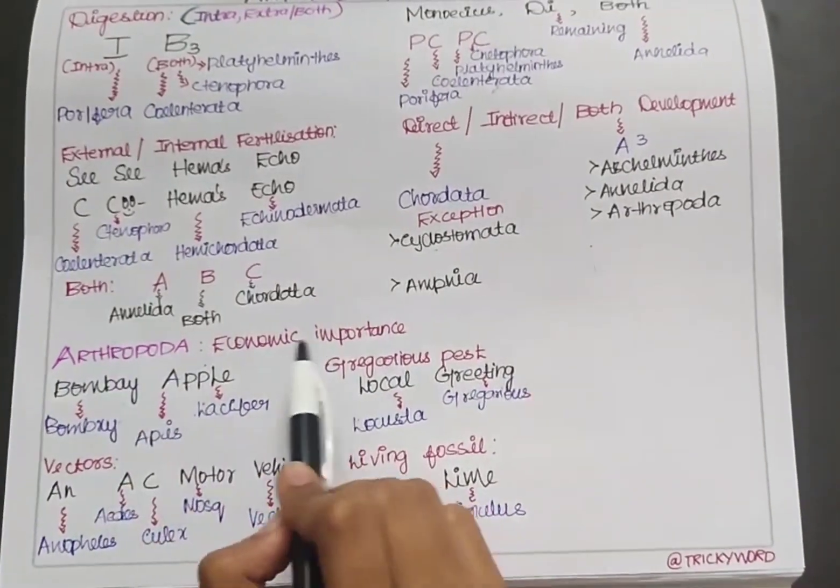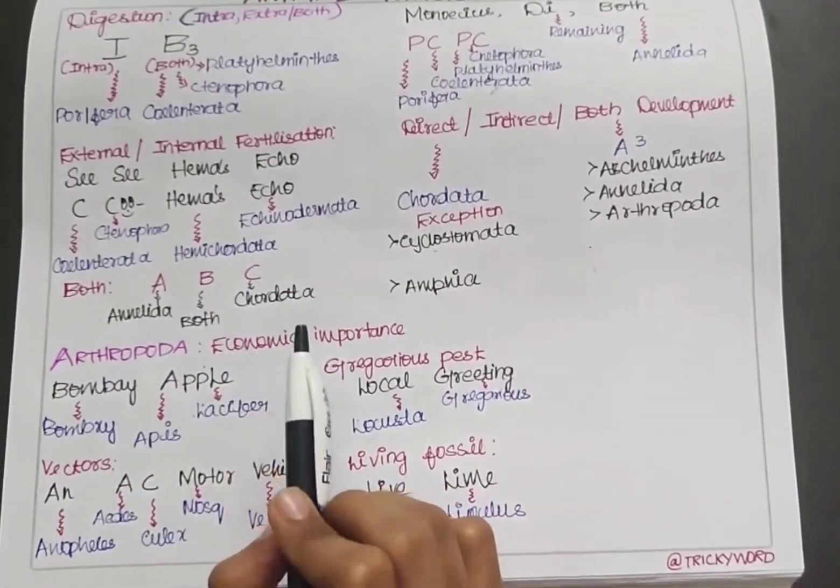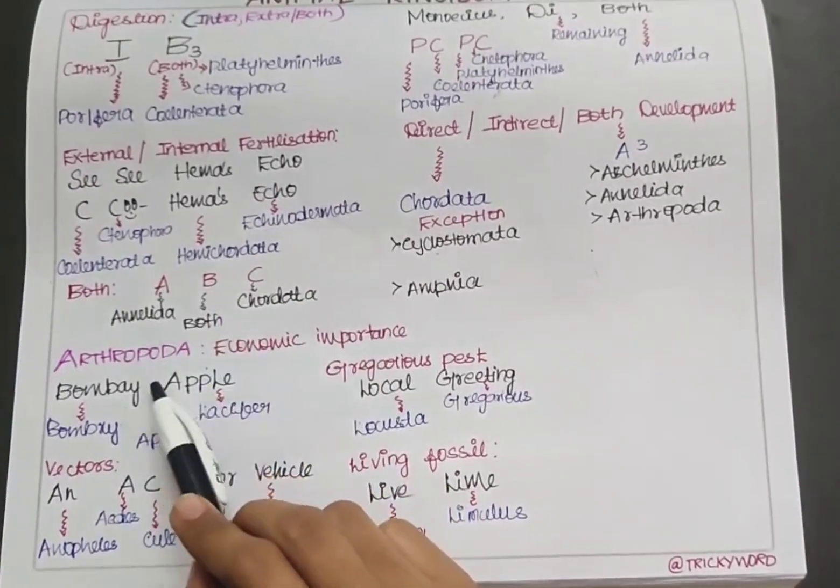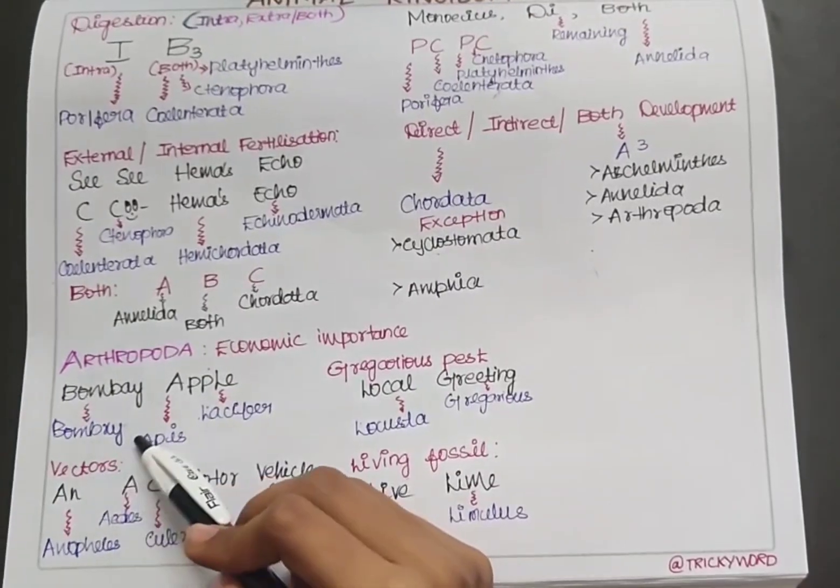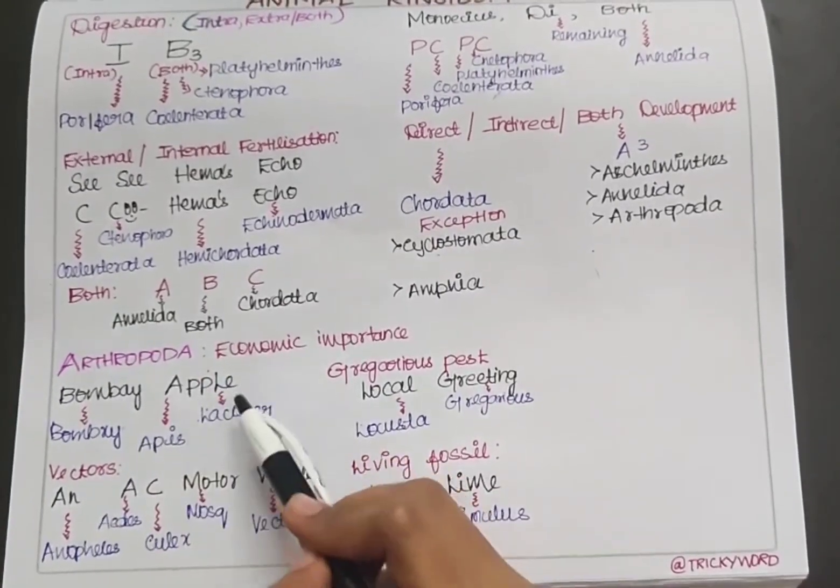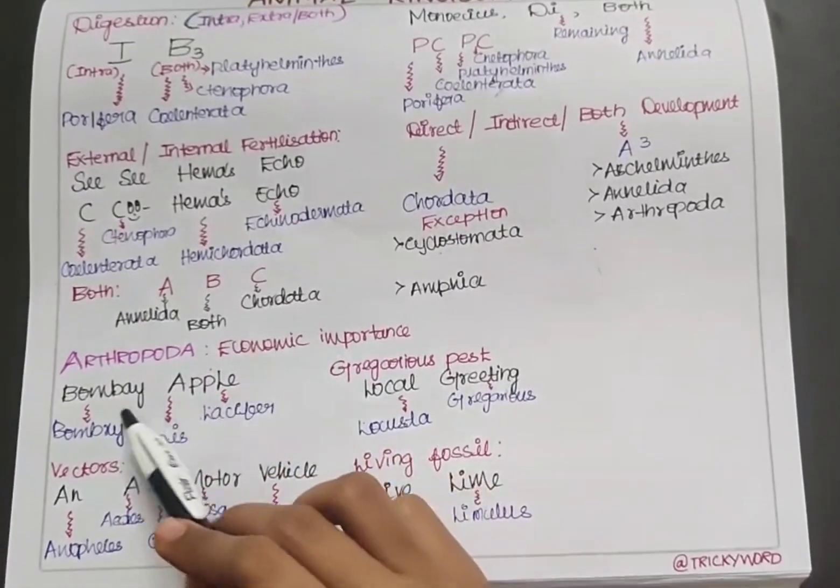Now we'll see examples from phylum Arthropoda. The economic importance of Arthropoda is given by 'Bombay Apple'. Bombay stands for Bombyx, A is for Apis, and L is for Laccifer. These are the economically important Arthropoda.